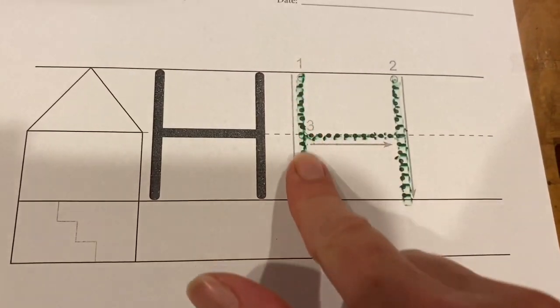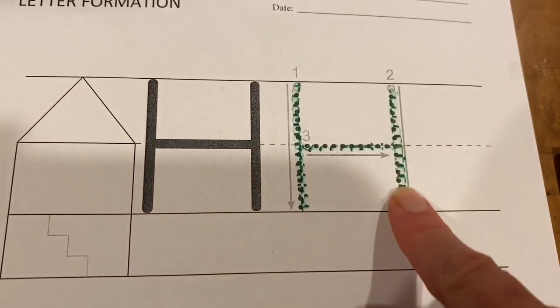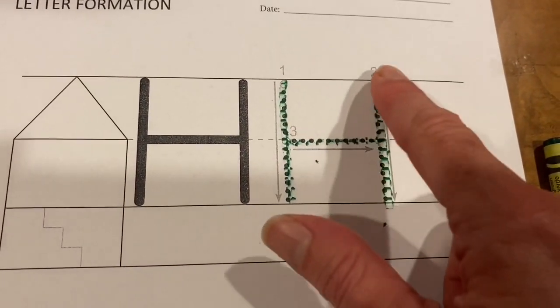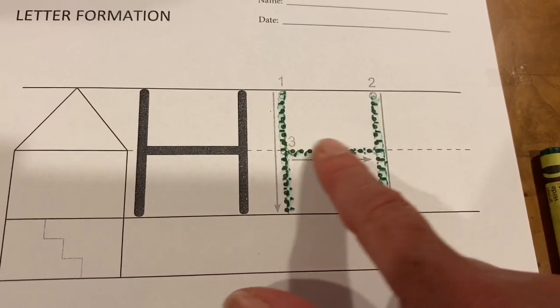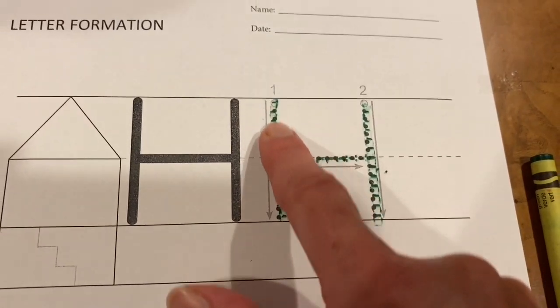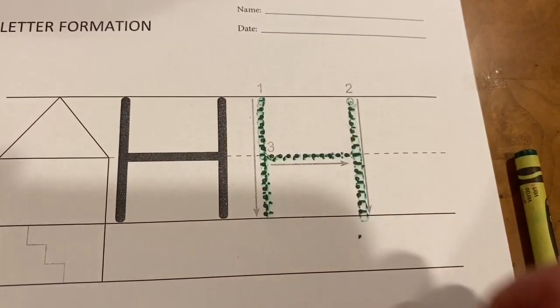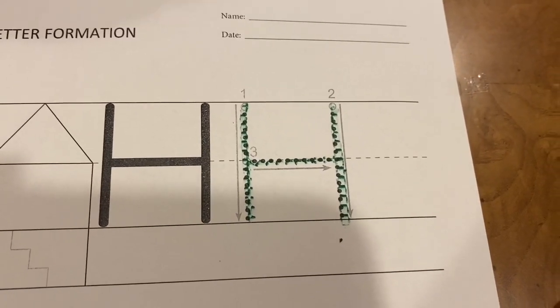And now we trace one, two, three. Line down, line down, line across. One more time, line down, line down, line across. You have made the letter H.